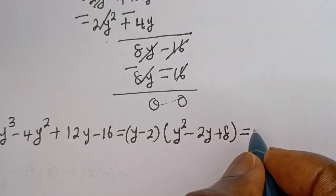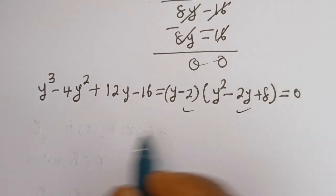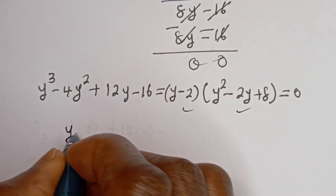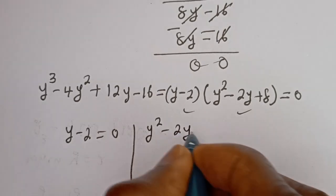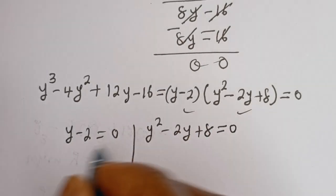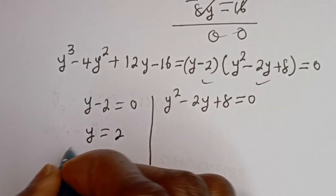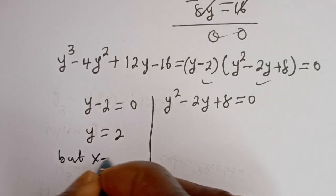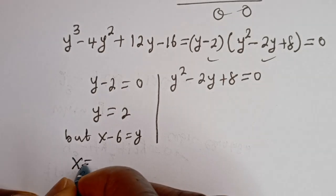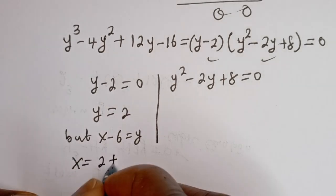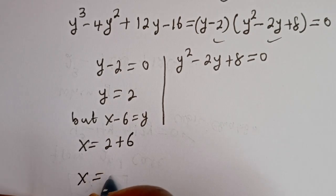Everything equals 0. From here there are two cases: the first case is y - 2 = 0, or the second case is y² - 2y + 8 = 0. From the first case, y equals 2. But we know that x minus 6 equals y, so x equals 2 plus 6, therefore x equals 8.